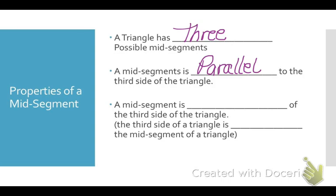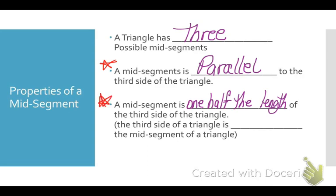I need you to memorize that — we're going to use that a lot. A mid-segment is also one half the length of the third side of a triangle. I need you to memorize that as well. These two properties we're going to be using over and over again. Another way to think about it: the third side of a triangle is twice the length of the mid-segment.